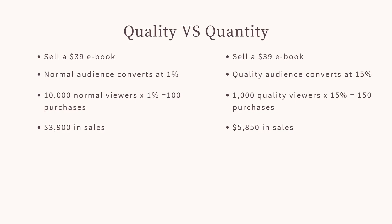So as you can see from quality versus quantity — with the quantity side, you have to reach 10,000 people to make $3,900 in sales. But on the quality side, you're only reaching 1,000 people. So 1,000 people versus 10,000, and those 1,000 people convert at a higher rate, meaning you're reaching less people but you're making more in sales. That is what niching down and having a quality audience can do.